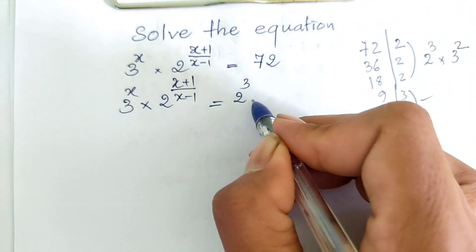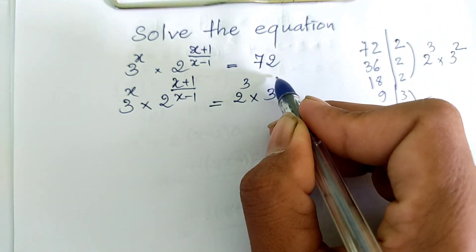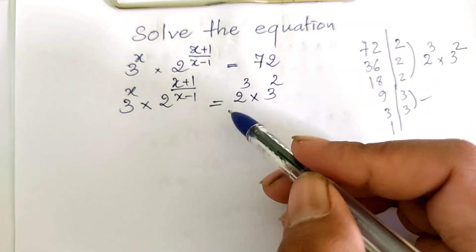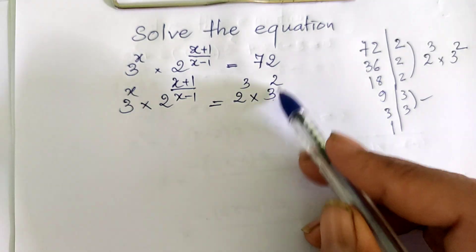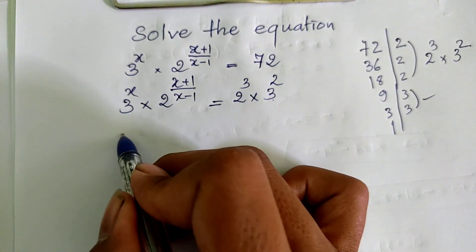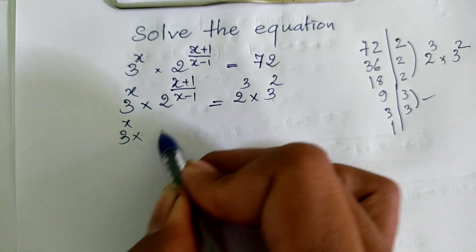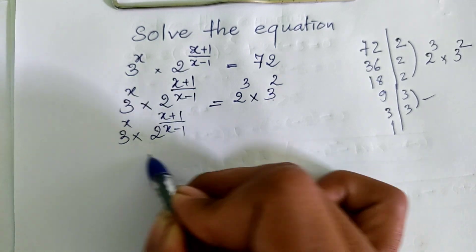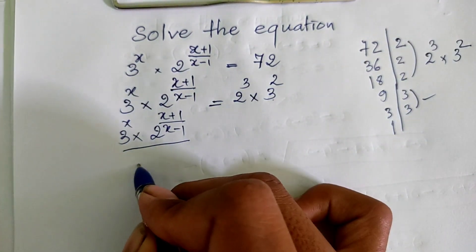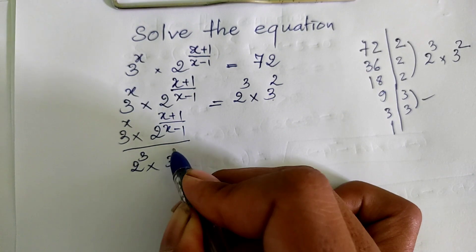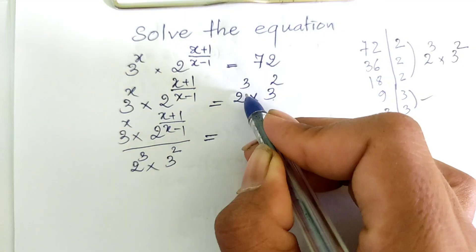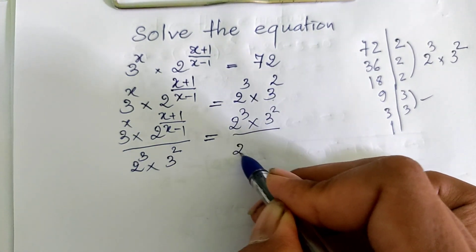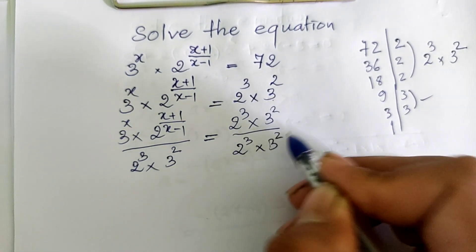So our equation can be written as: 3 power 8n multiplied by 2 power 8 plus 1, divided by h minus 1, equals 2 power 3 multiplied by 3 squared. We then divide both sides by 2 power 3 multiplied by 3 squared. So the right-hand side simplifies to 2 power 3 multiplied by 3 squared, divided by 2 power 3 multiplied by 3 squared.